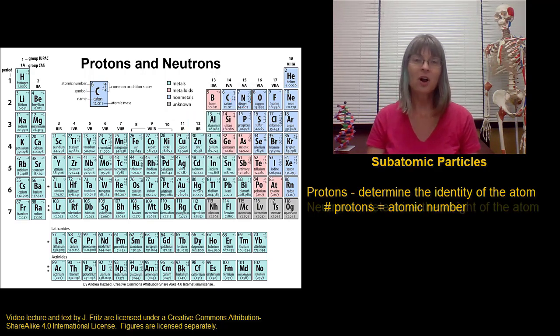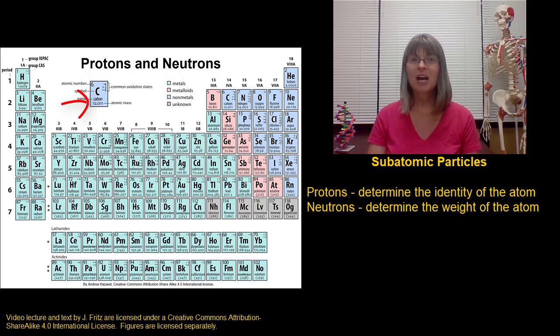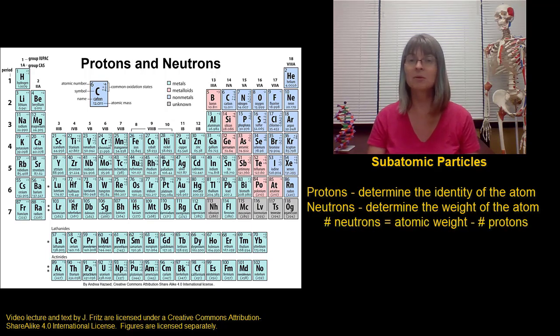The neutrons are also found in the nucleus, but they don't contribute to the identity of the atom. Instead, they contribute to the weight of the atom. On the periodic table, usually found under the symbol, we see the atomic mass. The atomic mass tells us about the weight of the atom and tells us the number of protons plus the number of neutrons.